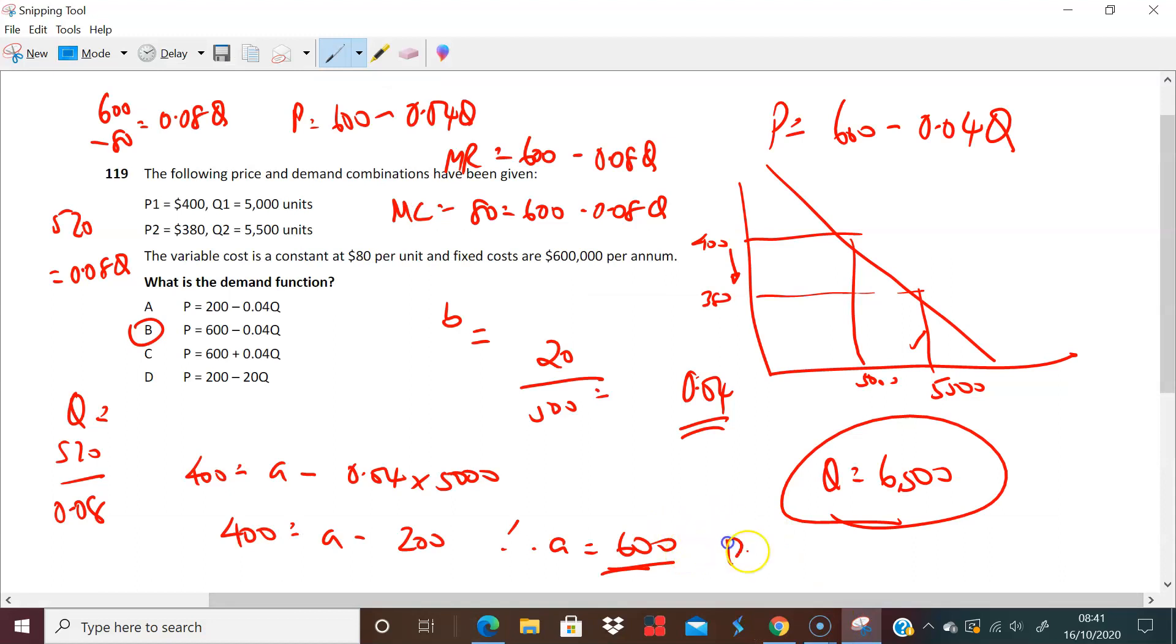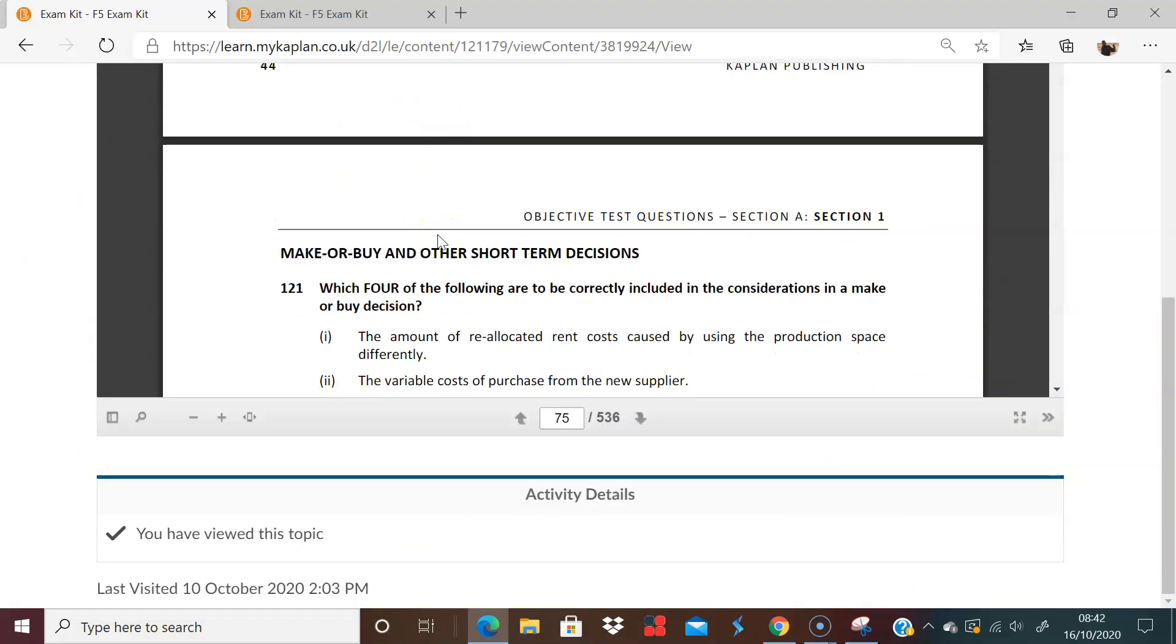So let's just look at that. So the optimal price, therefore, and we know what P is, we know that P equals 600 minus 0.04Q. So Q is 6,500, so I'm going to multiply 0.04 times 6,500, I get 260. So this whole thing here is 260. So therefore P equals 600 minus 260, and P is therefore equal to 340. P equals 340. So here we are, 340. And that's the end of that. Brilliant. So there we are. So the answer here is 340.